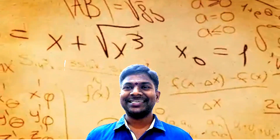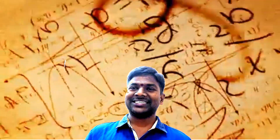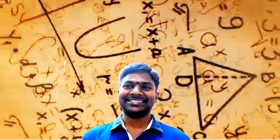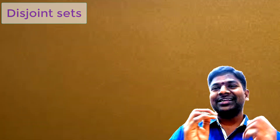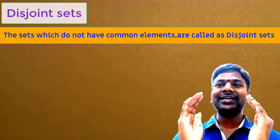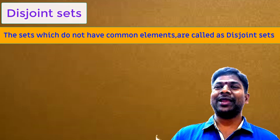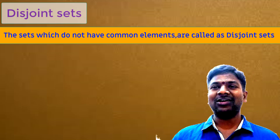Hi viewers and students. As part of our discussion in the chapter on sets, today we discuss a new concept: disjoint sets. The sets which do not have common elements are said to be disjoint sets. Disjoint sets means the sets not having common elements.